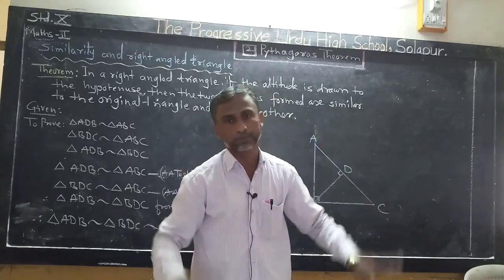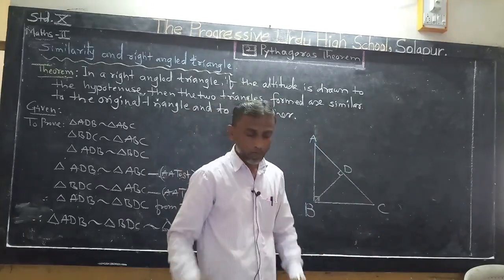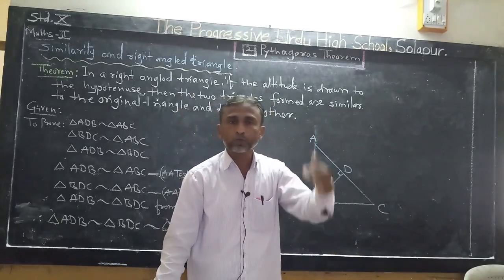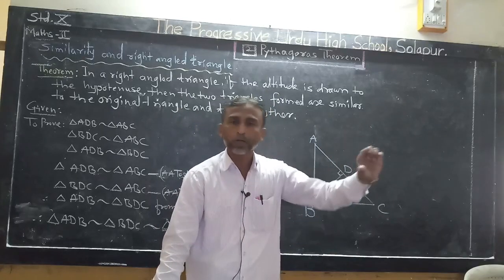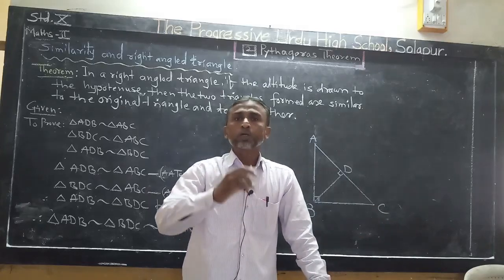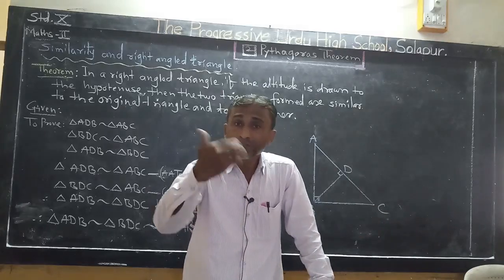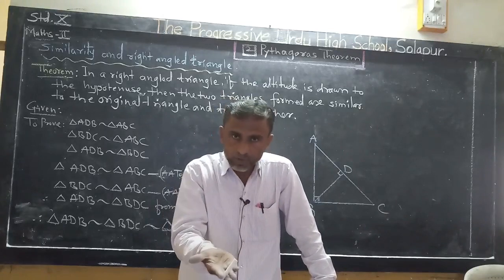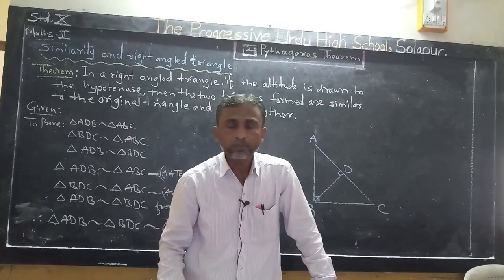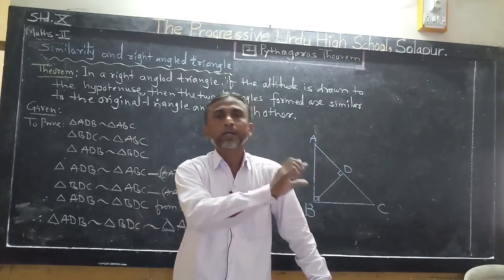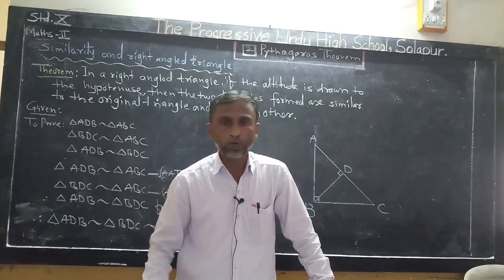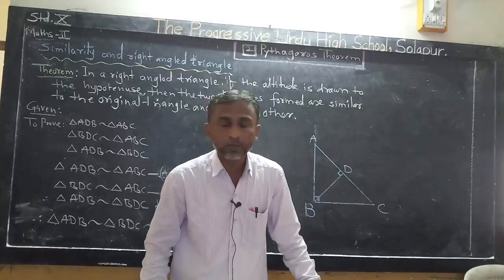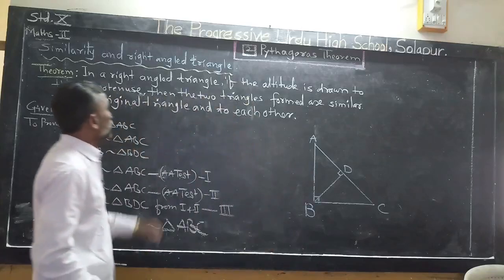All three triangles are similar. When you are going to write the theorem, you should follow different steps: first write what is given, then write what we have to prove, then write the construction if there is any, and then write the proof of the theorem.